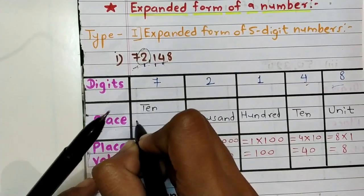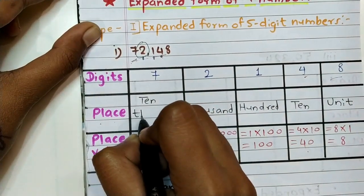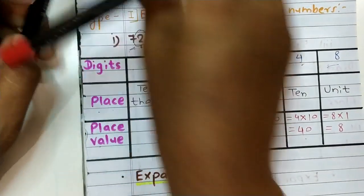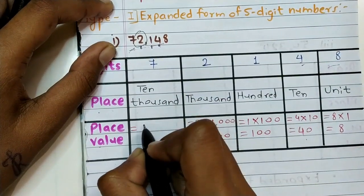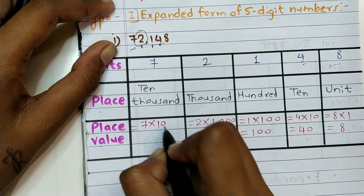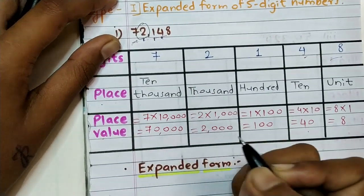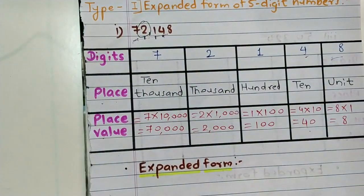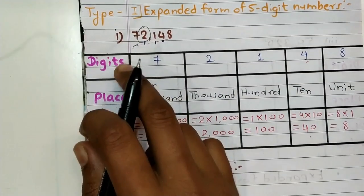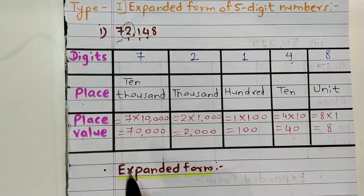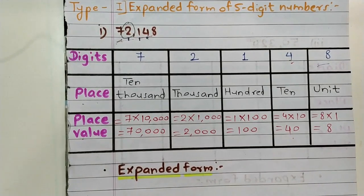Last digit seven — its place is ten thousands, so here we write ten thousand. Place value of seven equals seven into ten thousand, which is equal to seventy thousand. Now we create the expanded form by adding all place values.